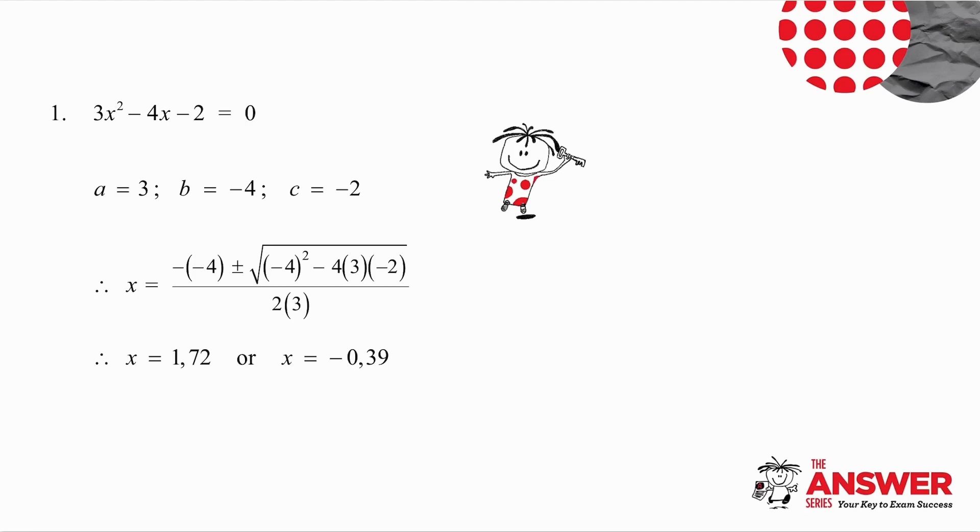So x equals minus b plus or minus the square root of b squared minus 4 times a times c all over 2a.